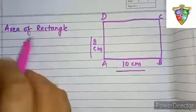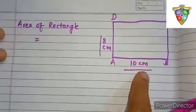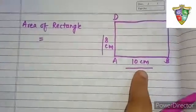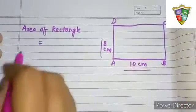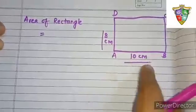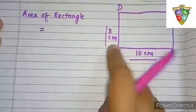First of all, we have to see that both the length and the breadth have to be in the same unit. So here I have taken 10 cm length and 8 cm breadth.